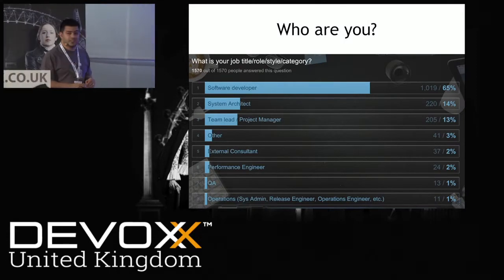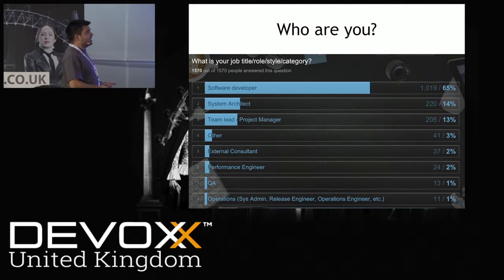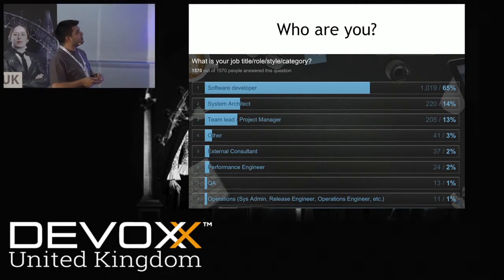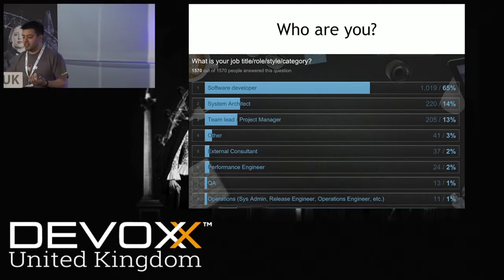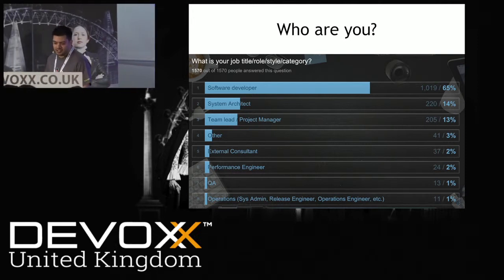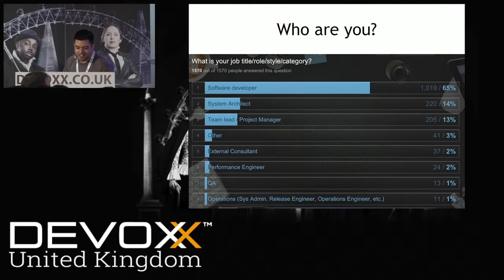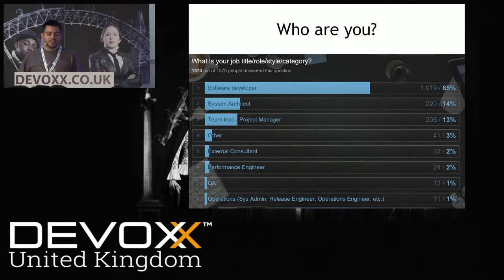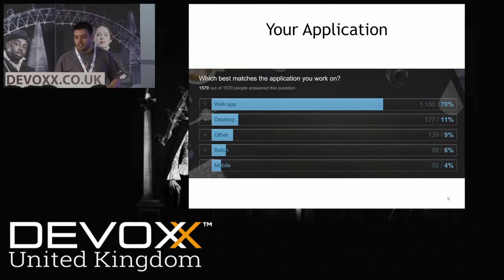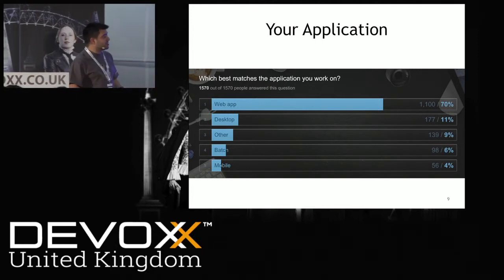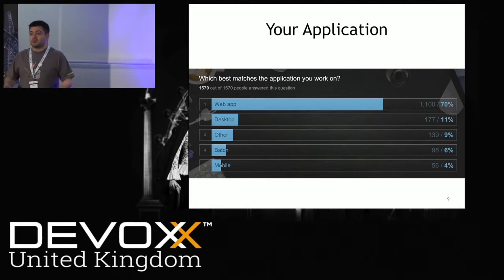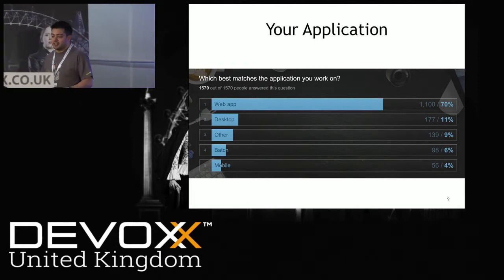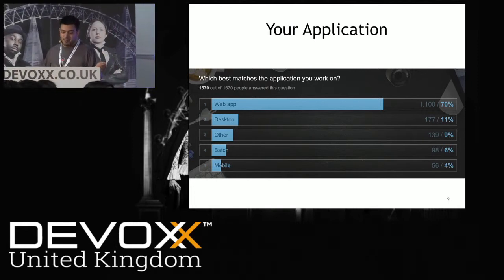Here are the results — just over 1,570 respondents. Most of the people who responded are technical people: software developers, software architects, team leads, project managers. Their applications were mostly web apps — a few desktops, some others like application servers and middleware — but virtually all web applications.